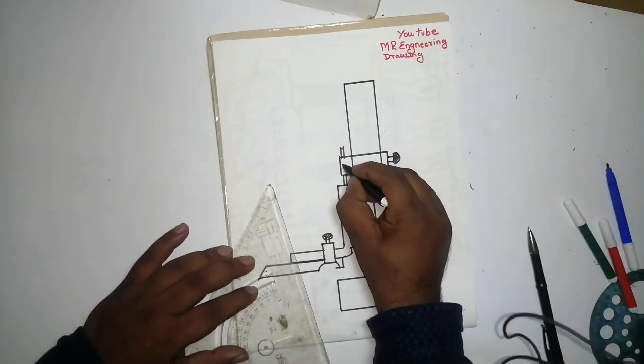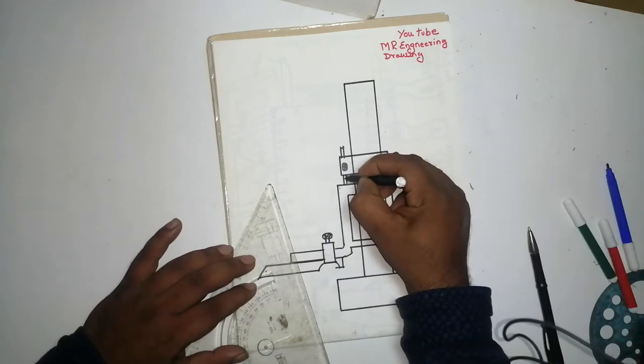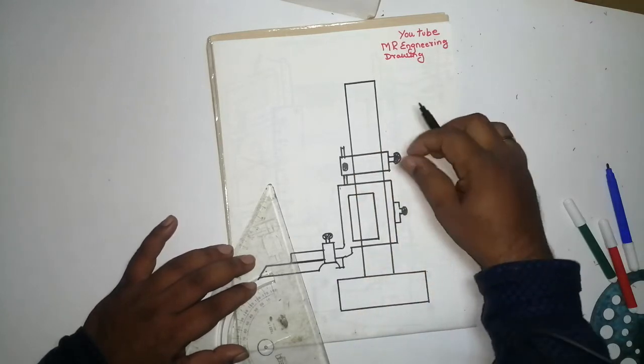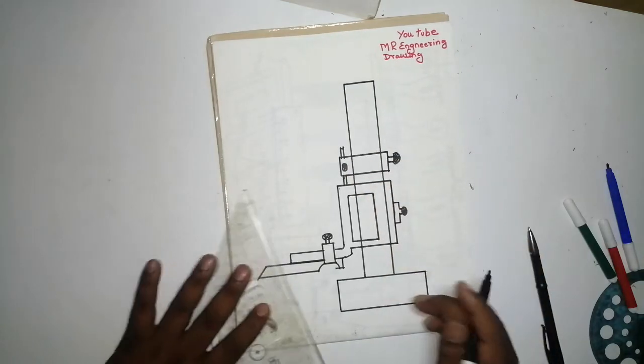After that, this is for adjusting the net. This is the net. This is the scribing. If you rotate like this, then the lock will loosen and open.